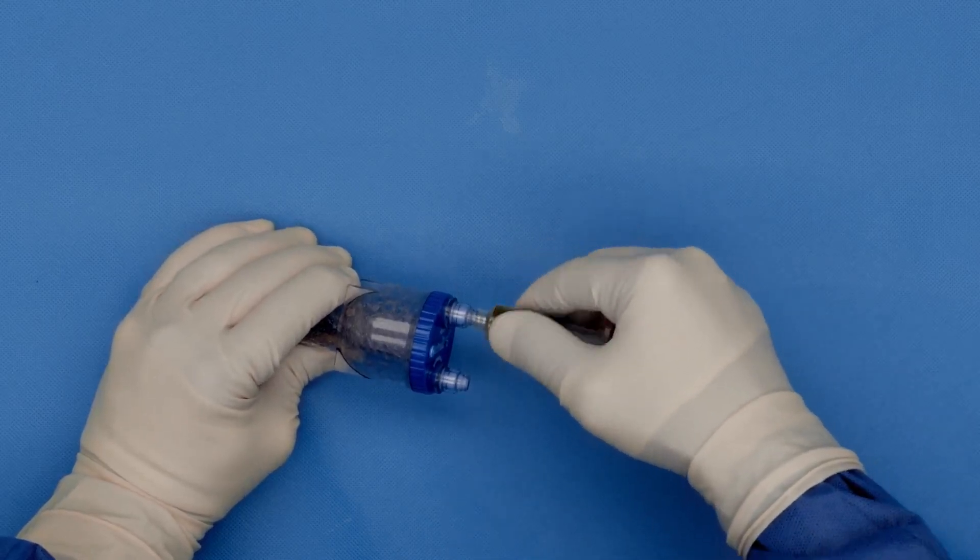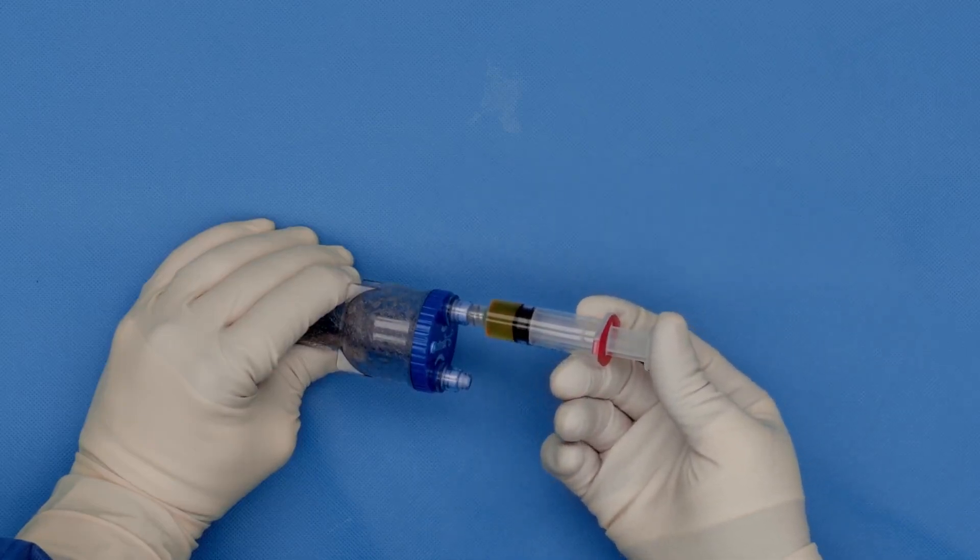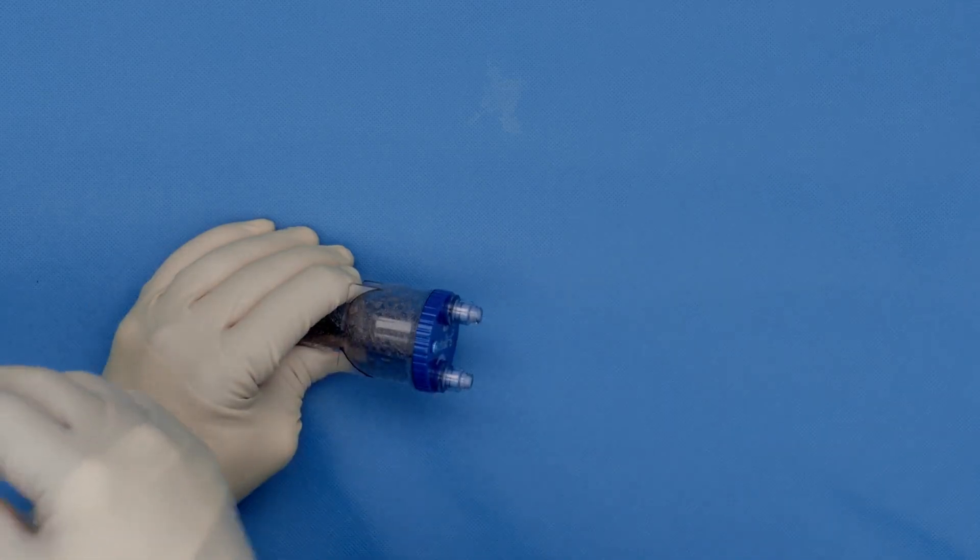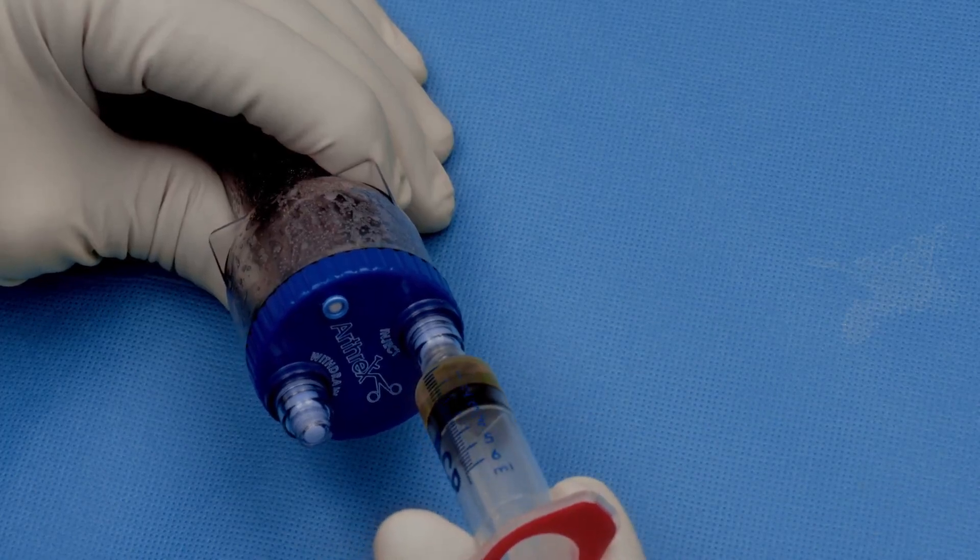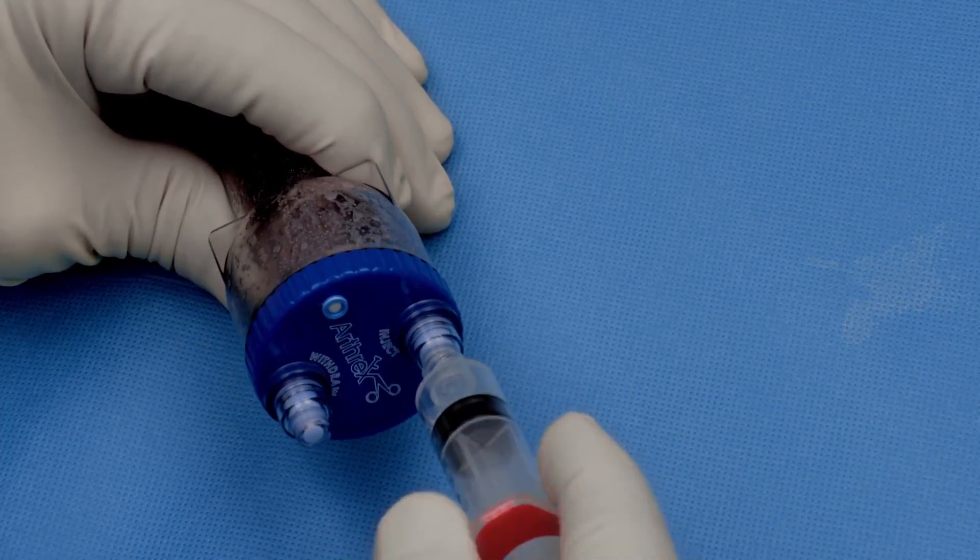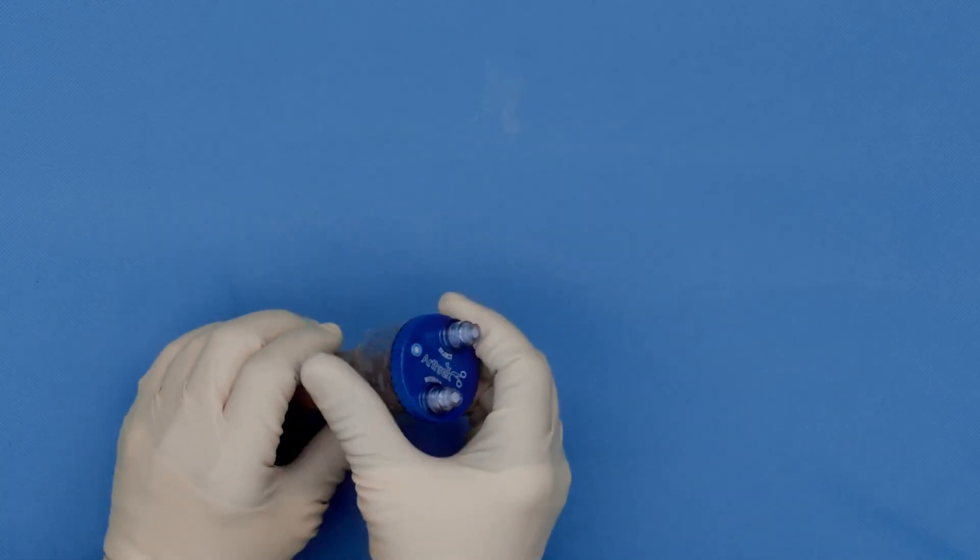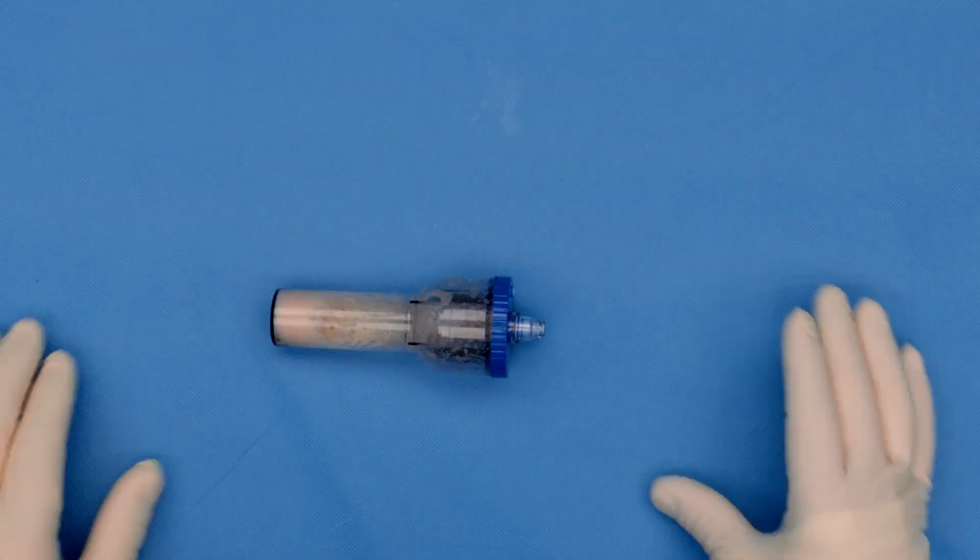After 10 to 15 minutes or after gelling has occurred, you are ready for the next step. You again connect your other ACP syringes to the thrombinator to totally inject 8 ml of ACP. And then you have to shake the device again for 5 seconds.